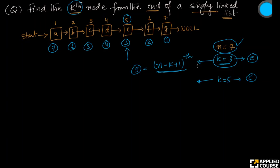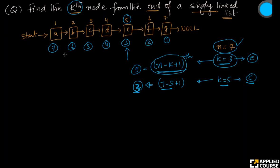Similarly, if k equals 5 and I want the fifth node from the end, that is 7 minus 5 plus 1, which equals 3. So the fifth node from the end is the third node from the beginning, meaning the value is C, not B. The key observation: if you know n, then kth from end equals (n minus k plus 1)th node from beginning. This is the key observation we will use to build a simple algorithm.